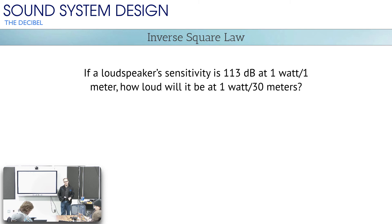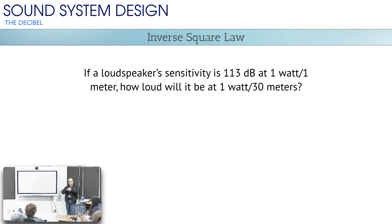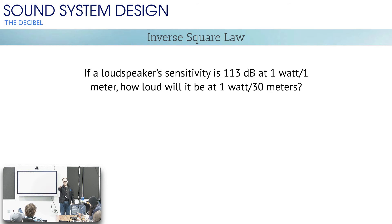Loudspeakers are specified by their sensitivity — how much sound they create for every watt of power that goes into them. We know watts is actual work: that watt moves the loudspeaker a certain amount, and by moving it a certain amount, a certain amount of actual sound gets generated. They tend to specify it in terms of one watt at one meter: you put one watt of power into that loudspeaker and measure it one meter away. That's how loudspeakers are specified.